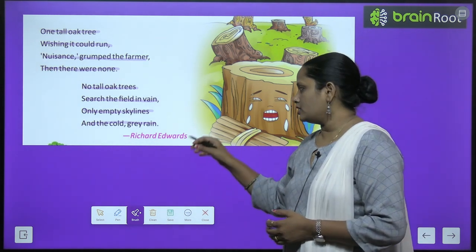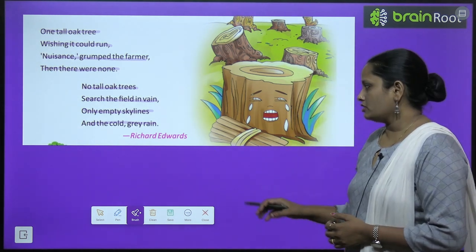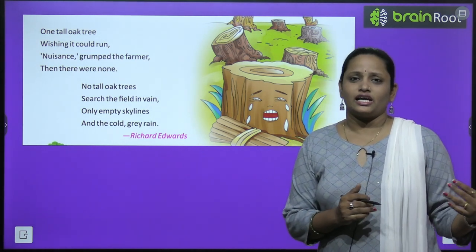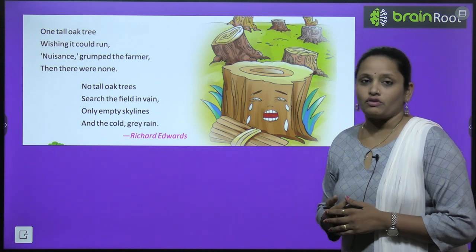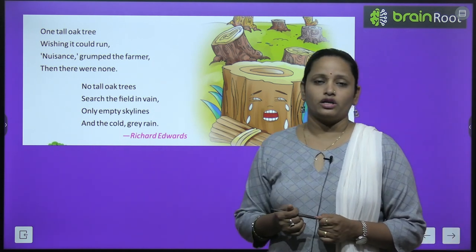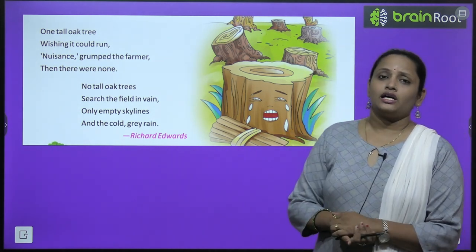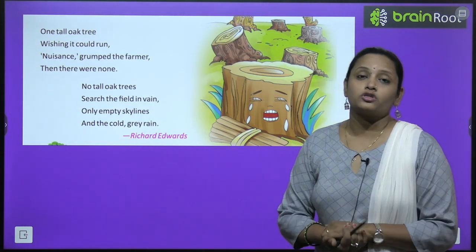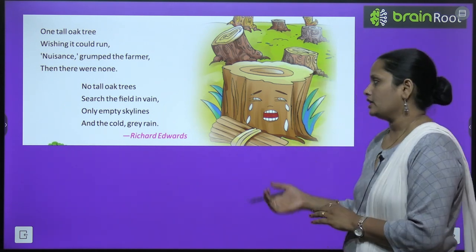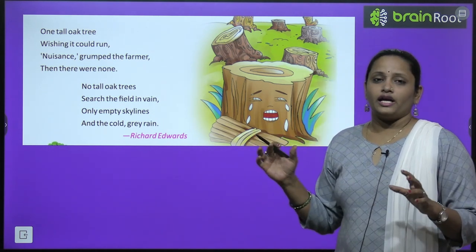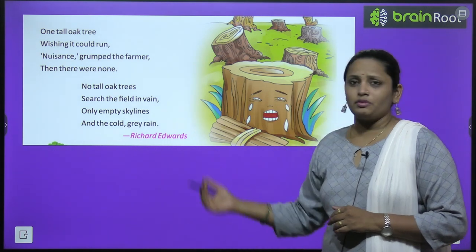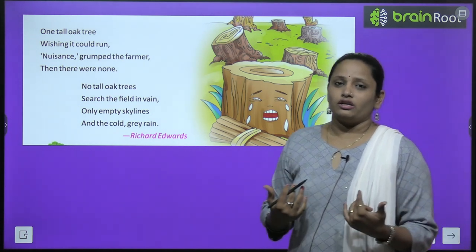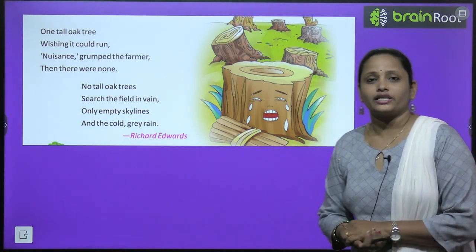The poet is Richard Edwards. Children, I hope you understood the poem. اس میں ہم نے یہ سیکھا کہ دھیرے دھیرے پیڑ جیسے جیسے کٹتے گئے، وہاں کی رونق اور خوشحالی ختم ہو گئی۔ یہ پیڑ ہمارے لیے بہت important ہیں — یہ ہمیں oxygen دیتے ہیں اور rain کو ہم تک پہنچانے کا کام بھی یہی کرتے ہیں۔ اب جب پیڑ کٹ چکے تھے تو rain بھی بہت اداس — grey — لگ رہی تھی۔